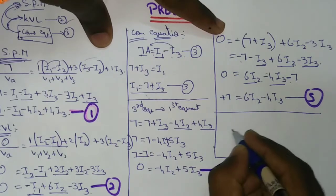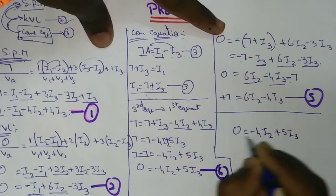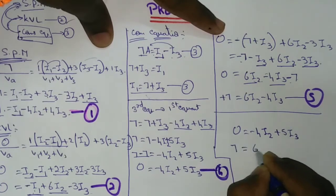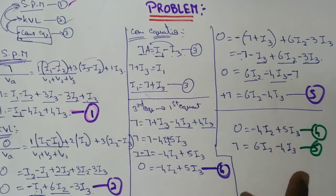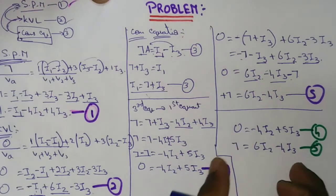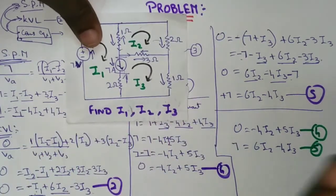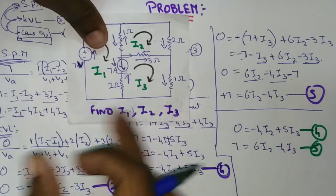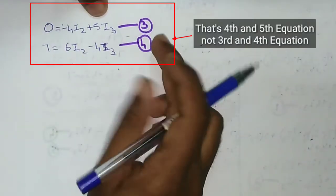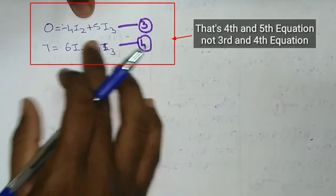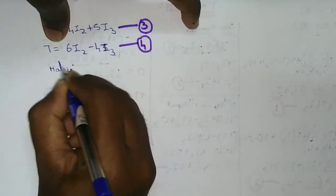Fifth equation: 0 equals minus 4I2 plus 5I3. And 7 equals 6I2 minus 4I3. This is the fourth equation and this is the fifth equation. You can use Cramer's rule to solve for I2 and I3. You can use a matrix formula — let's start.